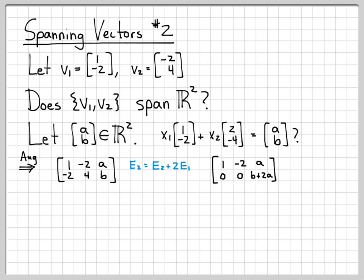And already we see something different happen compared to the previous video. If I look at this row from the augmented matrix, it's really the equation 0x1 plus 0x2 equals b plus 2a, which is another way of saying 0 equals b plus 2a.